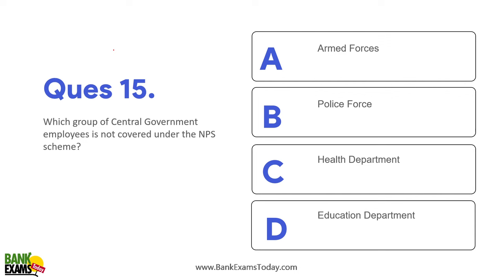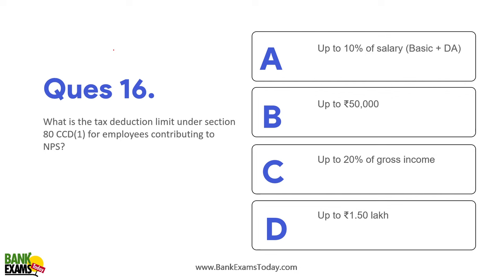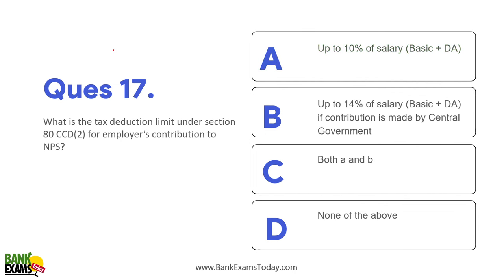Which group of central government employees is not covered under NPS? Armed forces are not covered under NPS — their system is totally different. Regarding tax benefits: you get a tax benefit of 1,50,000 rupees under Section 80C, but there is an additional benefit of 50,000 rupees under Section 80CCD. Employees can contribute up to 10% of their salary — basic salary plus DA — which can be up to 50,000 rupees. The tax deduction limit under Section 80CCD for employer's contribution can be up to 10% of salary (basic plus DA) for the private sector. For the government sector, if the contribution is made by the central government, it can be 14% of salary (basic plus DA). Overall, you get a 50,000 rupees tax benefit.